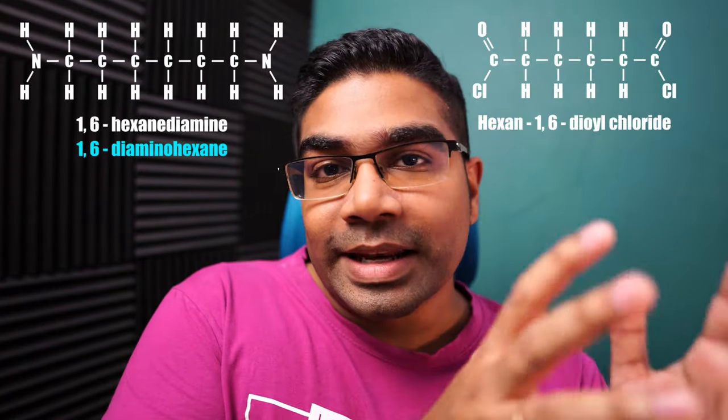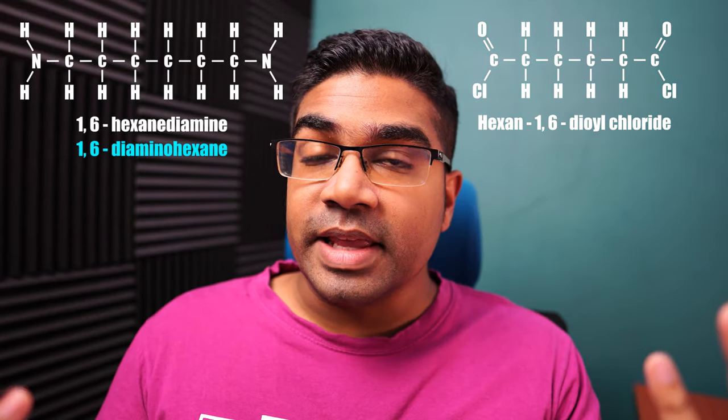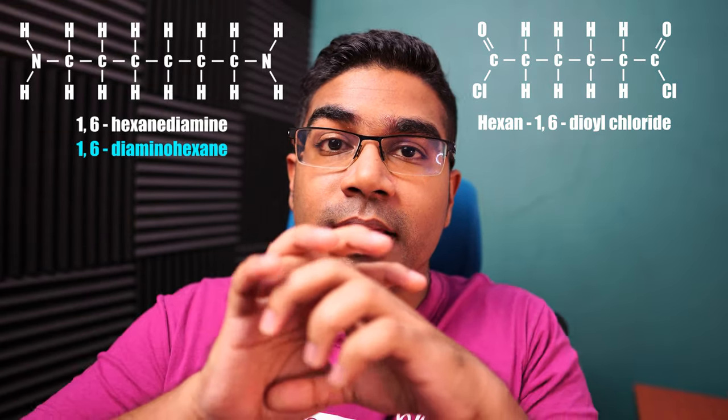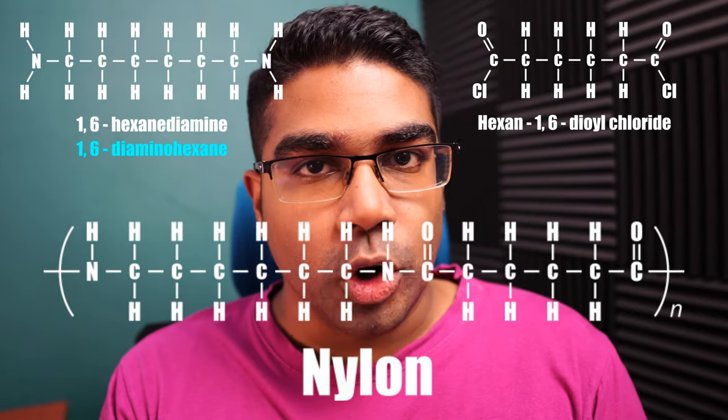Thousands of molecules will combine together to form one long polymer chain. The other type of nylon is a combination of 1,6-hexanediamine, as we saw earlier, but this time it combines with hexane diol dichloride. The result is the same — we get a polyamide chain, which is also called nylon.